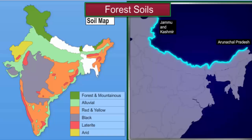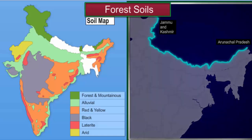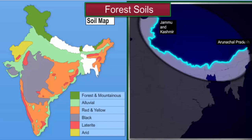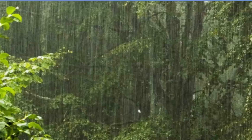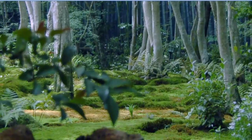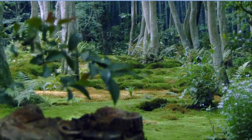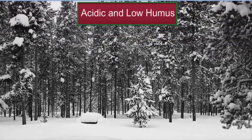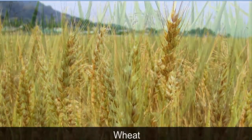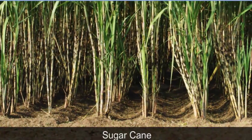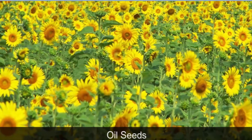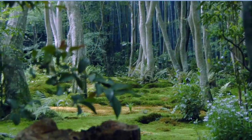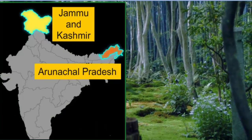Forest soils are found in the mountainous regions of the Himalayas, from Kashmir to Arunachal Pradesh. Most of these regions experience a cool climate with abundant rain and snowfall. The texture of forest soils varies from coarse grain on mountain slopes to loamy in river valleys. Forest soil in snow-covered areas is often acidic with low humus content. However, wheat, rice, sugarcane, and oil seeds are cultivated in forest soils in many parts of Jammu and Kashmir and Arunachal Pradesh.